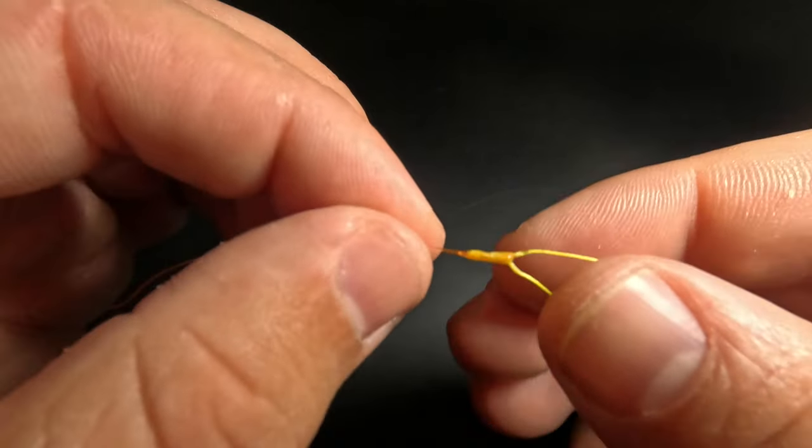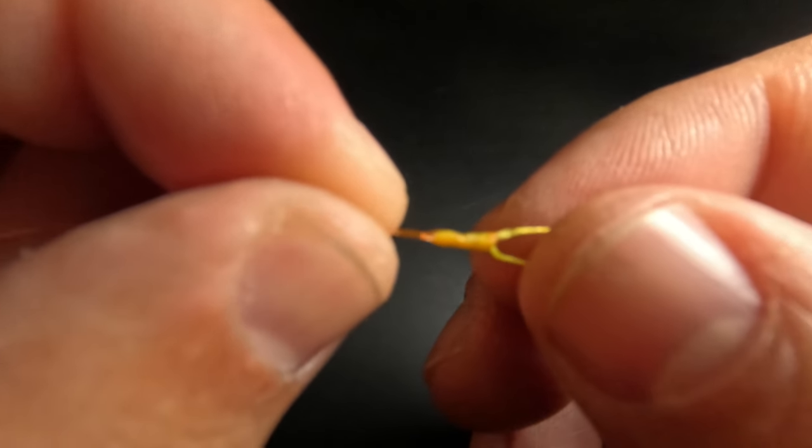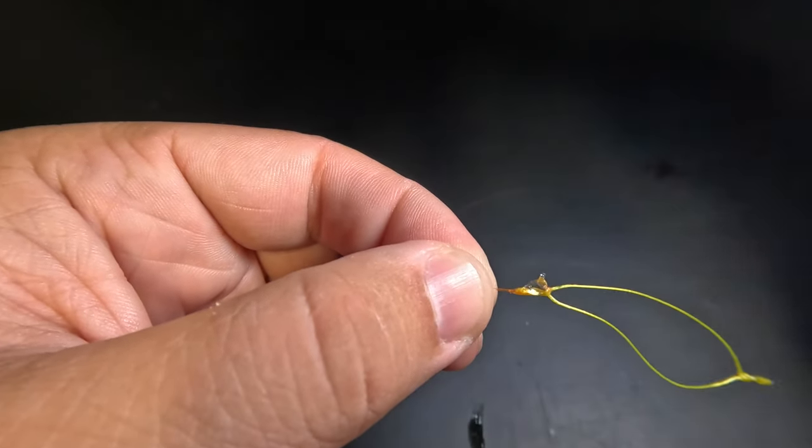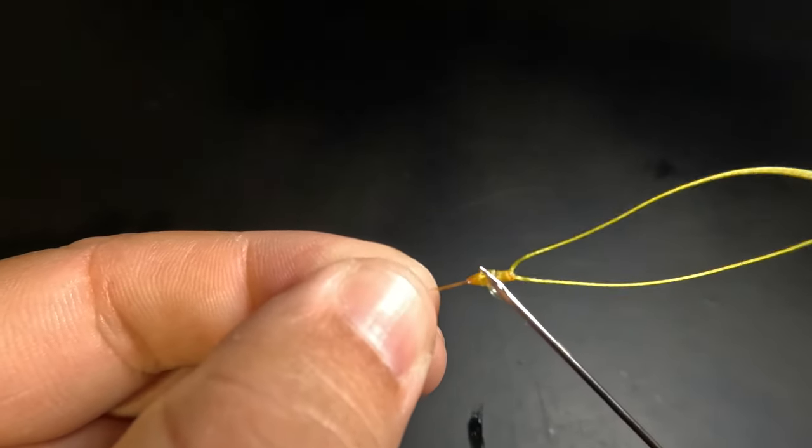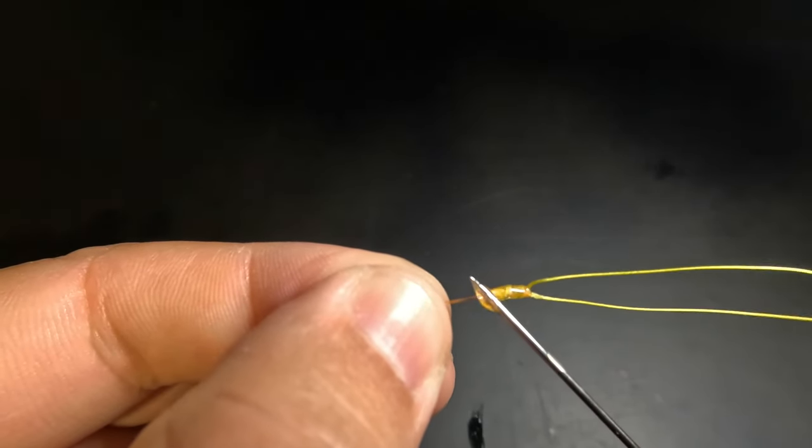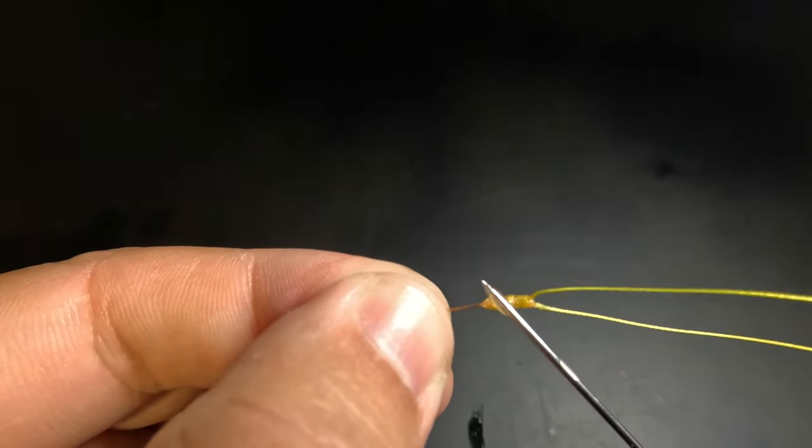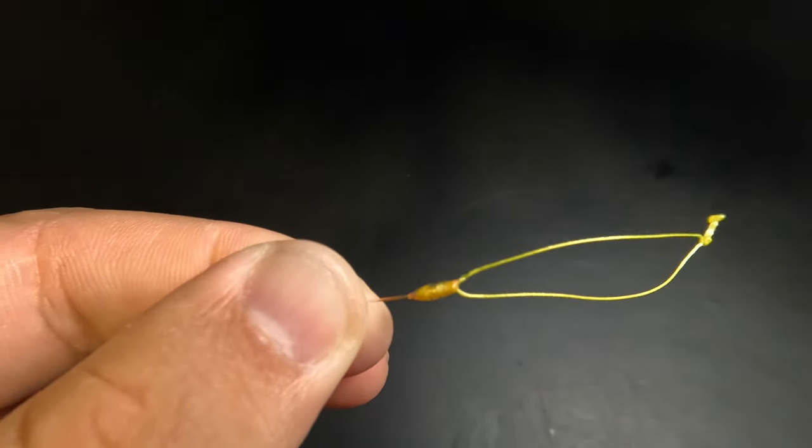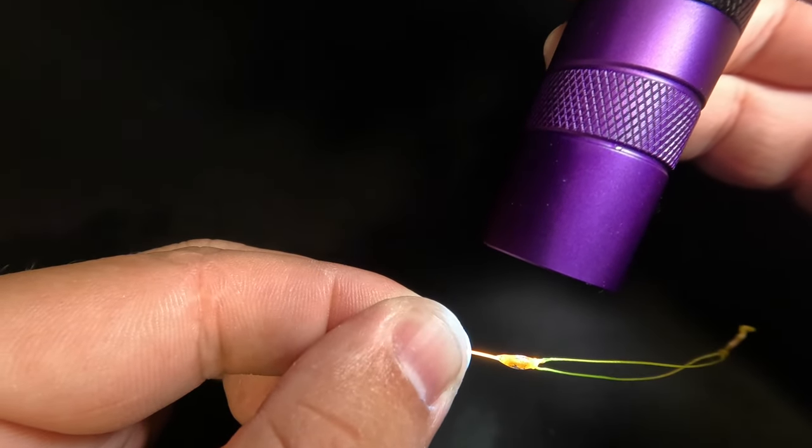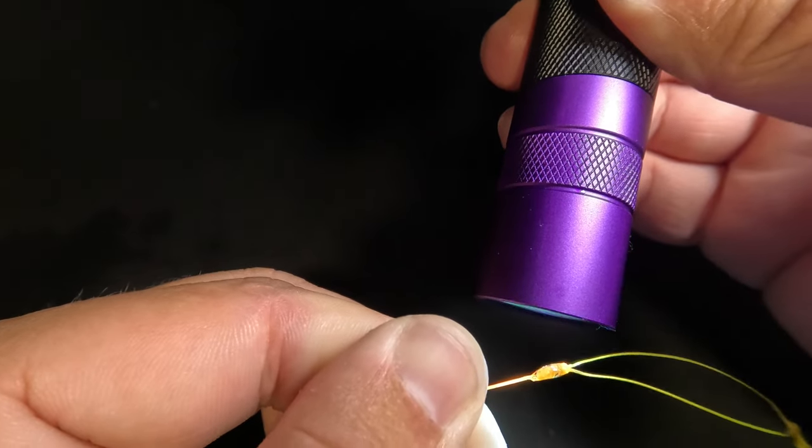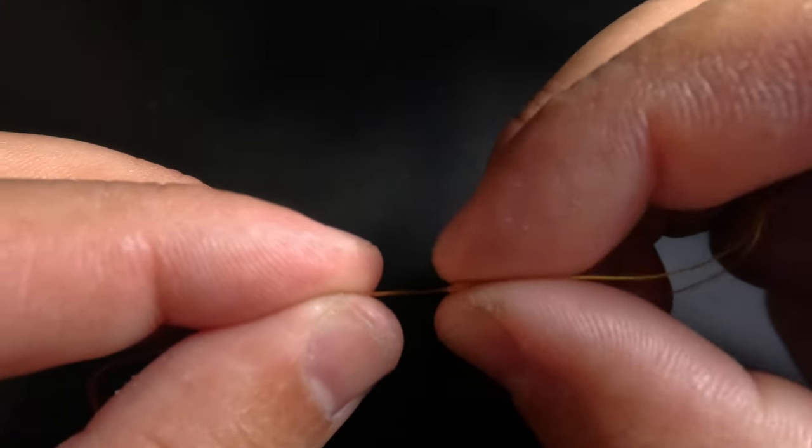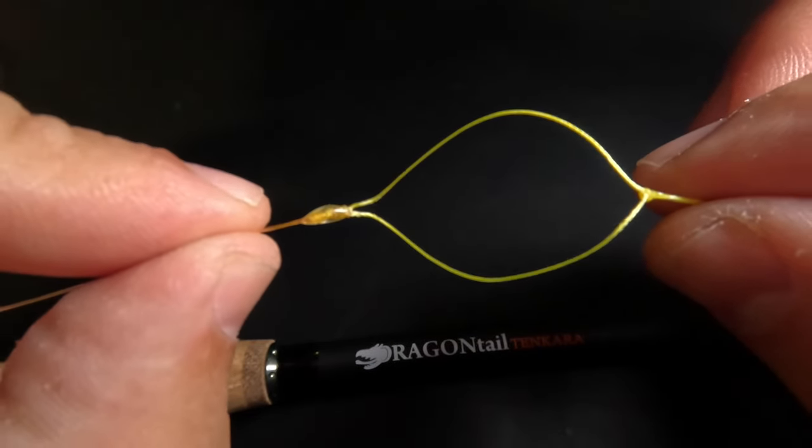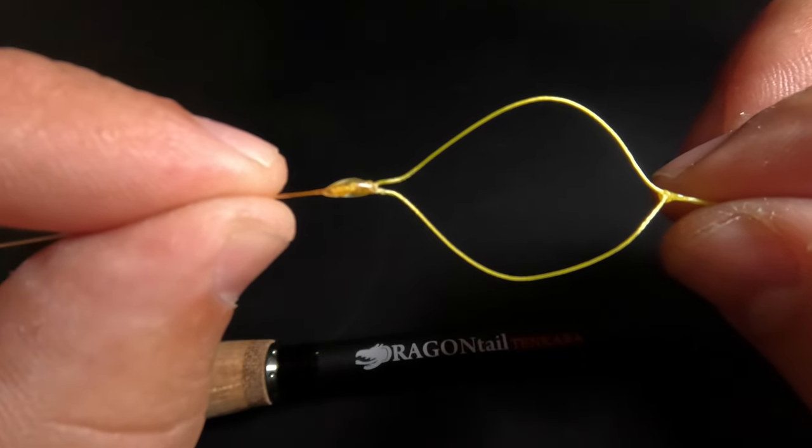And now for good measure, and again, this is completely optional, I'm going to add another layer of protection to this Alberto knot using some flexible UV resin. And right here, I'm just using my bodkin tool just to spread it around evenly. And as I'm spreading this, I want to make sure I also cover up the tag end of the level line, that small tiny little tag end. Once that has been spread around the knot nice and evenly, I'm going to hit that again with my UV torch. And once that resin has fully cured and is no longer tacky, now we have an extremely strong, dare I say, unbreakable level line loop connection utilizing a resin reinforced Alberto knot.